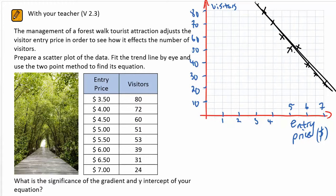So what I'm going to do now is take two values on that line, and then use those figures in order to find the equation of the graph. Now in this first instance, I'm going to take the point 5, 55, and the other point — the cross has there — 4, 70.